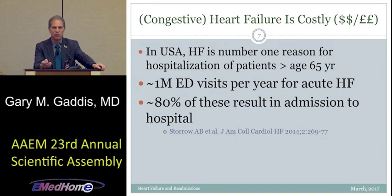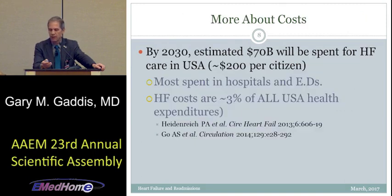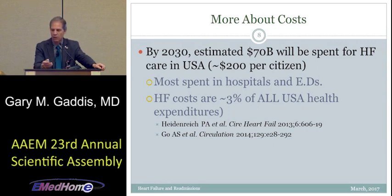I will teach you a decision rule that shows that 80% is higher than it has to be. By 15 years from now, it's estimated we'll be spending $70 billion for heart failure care in the United States — about $200 per citizen, roughly the incremental cost added by smoking per citizen. Heart failure is about 3% of all current U.S. health care expenditures.